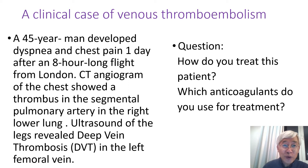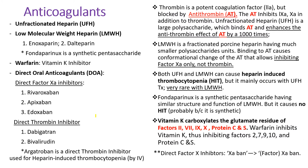Which anticoagulants do we use to treat him? Unfractionated heparin — how does it work? Thrombin is a potent coagulation factor 2a, but blocked by antithrombin. The antithrombin inhibits factors 9, 10, and thrombin. Unfractionated heparin is a large polysaccharide obtained from pigs, which binds antithrombin and enhances its antithrombin effect by a thousand times.